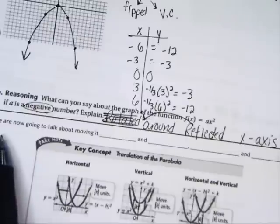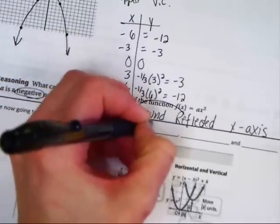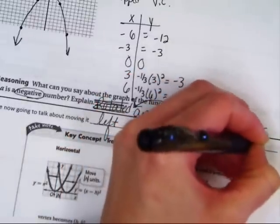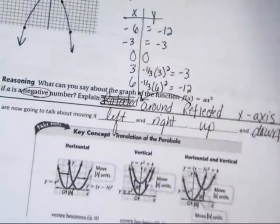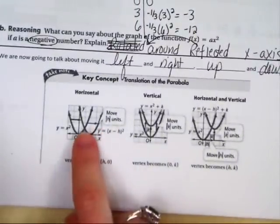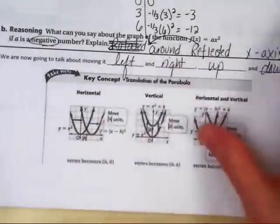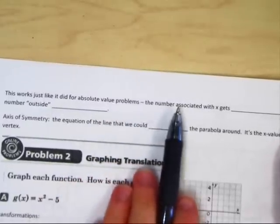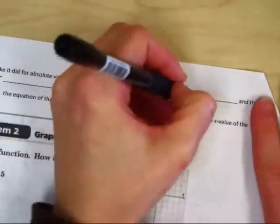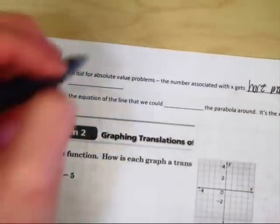We are now going to move on, and we are going to talk about moving it left and right and up and down. Now, depending on how well you guys learned your rules of your absolute values, the rules for quadratics are exactly the same. So left and right, if it says positive, if it's plus 3, you would move it to the left 3. If it's minus 3, you move it to the right 3. Same thing for up and down. If it's plus 3, you move it up. If it's minus 3, you move it down. This will work just like it did for absolute value problems. The number associated with x gets the horizontal movement, and the number outside gets the vertical movement.